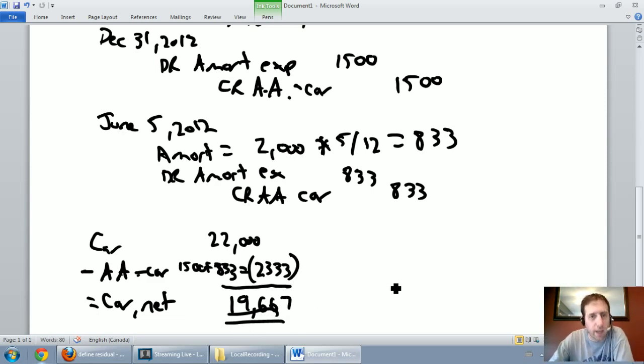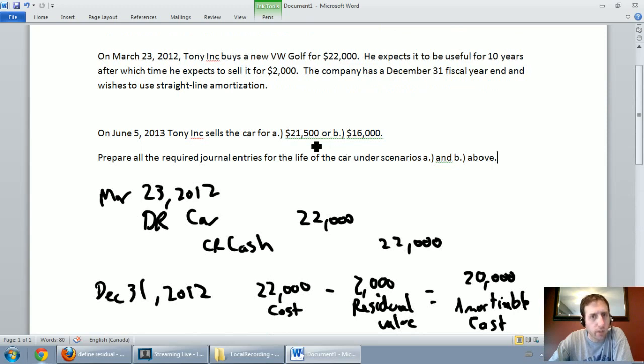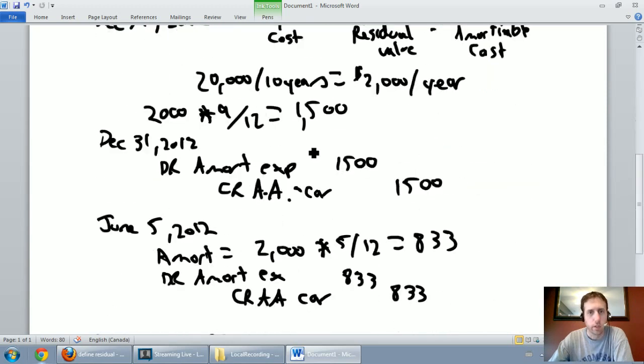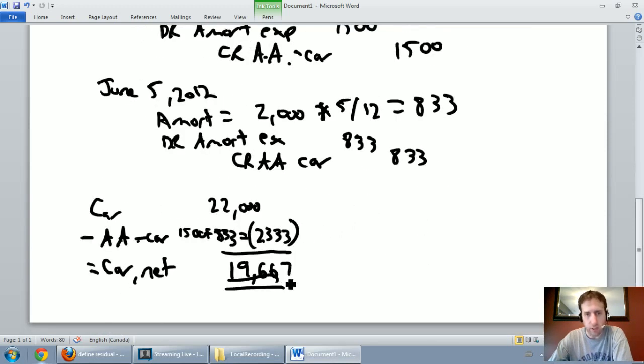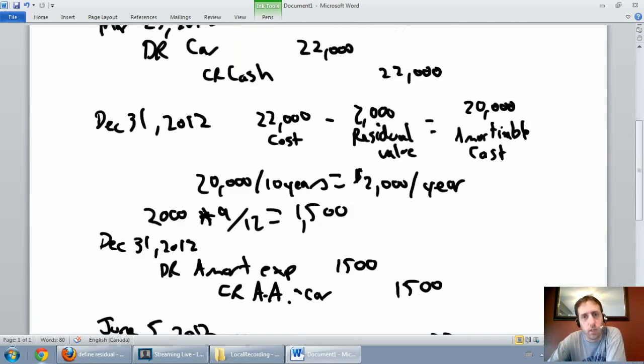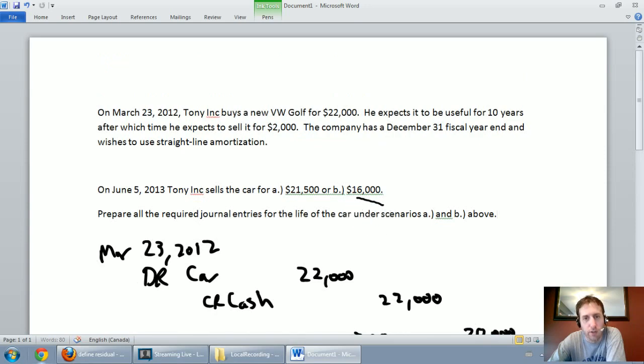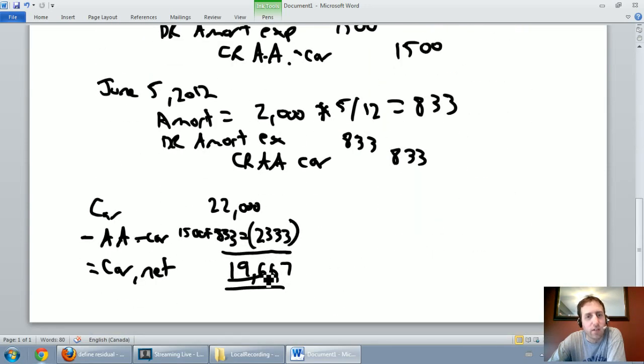Now, let's look at scenario A. Scenario A says we sell the car for $21,500. Well, this is wonderful news. We have an asset that we valued on our accounting records at $19,667. We're selling it for $21,500. In this situation, we're going to experience what's called a gain on sale. We sold the asset for more than it was worth. And in scenario 2, when we sell the car for $16,000, we're going to experience a loss on the sale of the car.